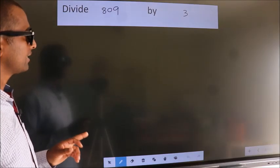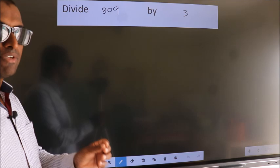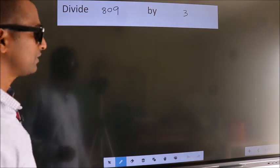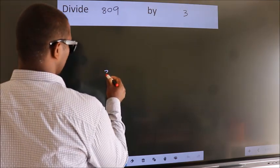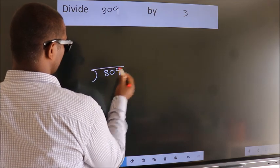Divide 809 by 3. To do this division, we should frame it in this way: 809 here, 3 here.